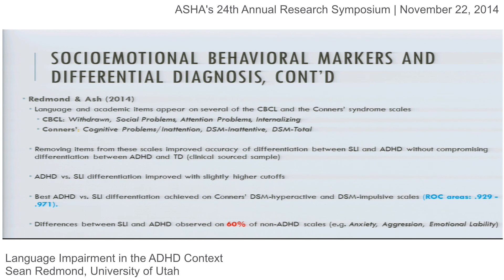Our ROC curves with the adjusted scales were in the low to high 90s range, which is quite good. When you collect behavioral rating scales on different clinical groups, you realize it's a matter of scale. The difference between children with SLI and typically developing kids is clearly very different from what you see in kids with a psychiatric condition — the symptoms in kids with ADHD are much more severe relative to typically developing controls than what you see when you compare kids with SLI and typical development.